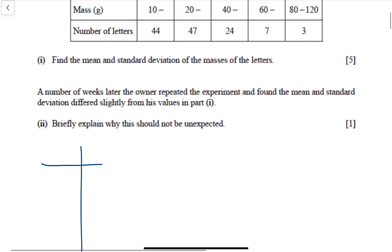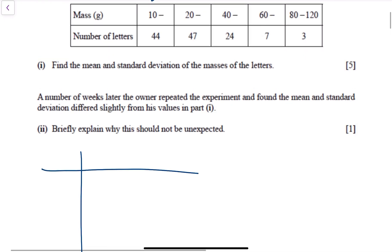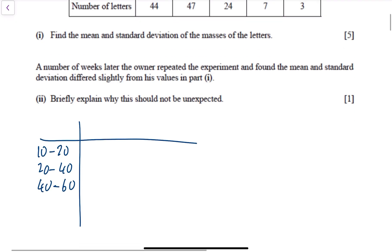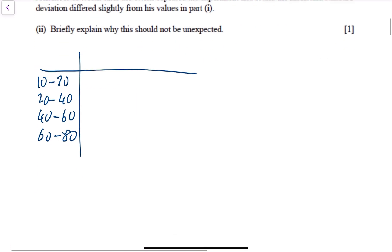So I'll do three columns here. The upper and lower boundaries—I'm really doing this in my head—it's really from 10 to 20, then 20 to 40, then 40 to 60, then 60 to 80, and then 80 to 120.